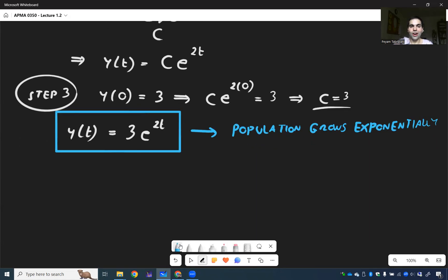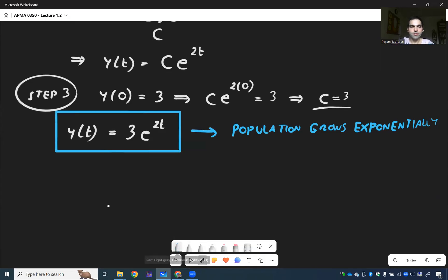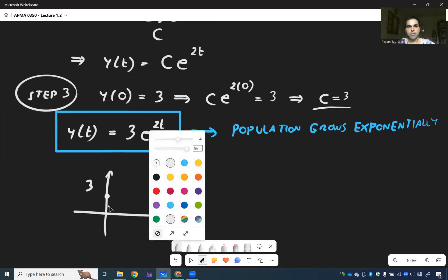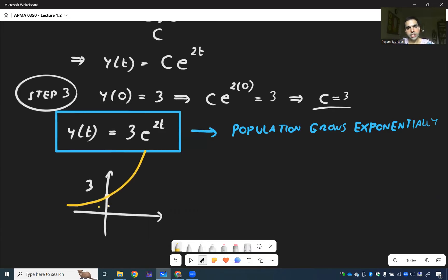And if you want to draw what this looks like, you then get the following. Well, we saw that initially, the bacteria population is 3, but then, it just becomes, it's whee! So, this is why it's 3e to the 2t.